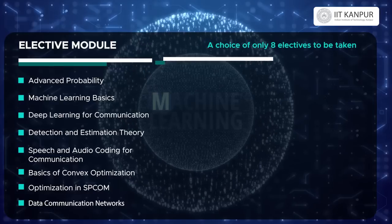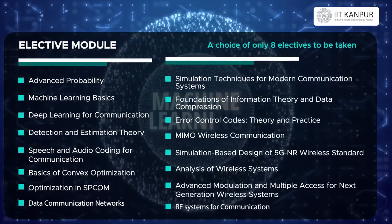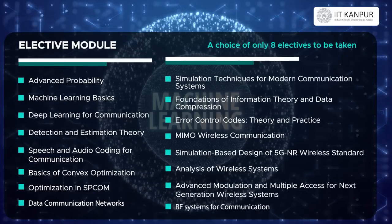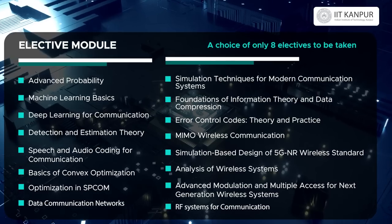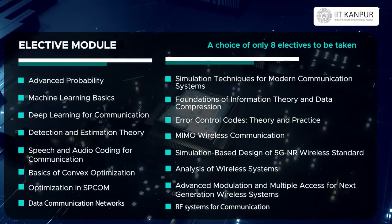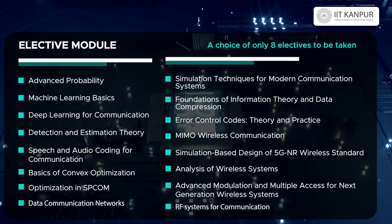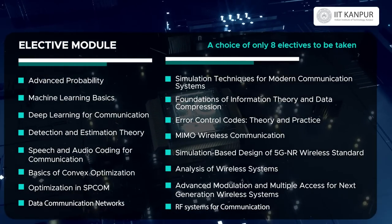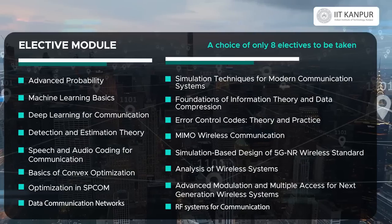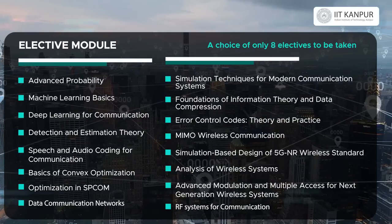The electives include machine learning basics, deep learning for communication, deep learning for 5G systems, detection and estimation theory, basics of convex optimization, and data communication networks.